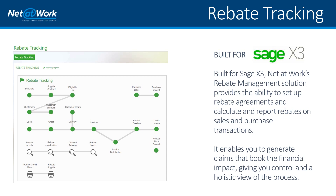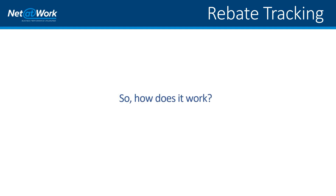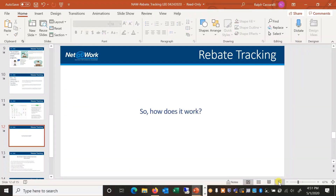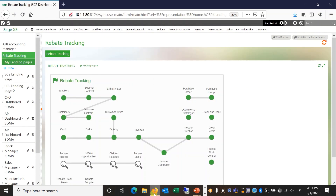In order to solve for this, we built an enhancement using all of the Sage X3 development platform tools. Our solution provides the ability to set up rebate agreements between suppliers and customers, calculate and report these rebates on sales and purchase transactions, generate claims that book the financial impact, manage the accruals, and give you control and a holistic view of the entire process.